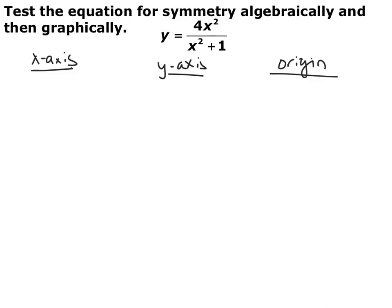Now we're going to try an example of testing an equation algebraically to see if it has symmetry. Our equation is y equals 4x squared divided by x squared plus one. We want to know what type or types of symmetry this equation has. You always have to test all three types. First we're going to test x-axis symmetry, which says that if you have a positive y, you also have a negative y. We replace every y with a negative y and see if it simplifies to the original. We end up with negative y equals 4x squared divided by x squared plus one. There's no way to manipulate this to look like the original, so this does not have x-axis symmetry.